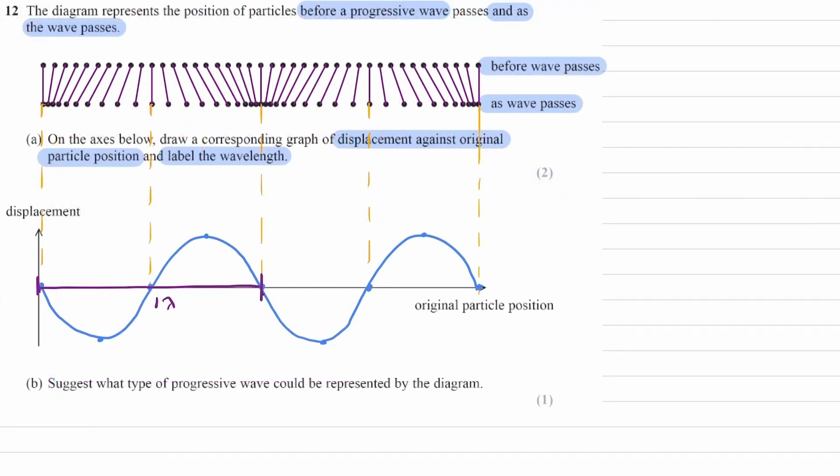And then for part B, suggest what type of progressive wave could be represented by the diagram. This is a longitudinal wave passing through particles. The particles are moving back and forth. Their displacements are parallel to the direction of energy propagation. Energy is transferring this way. So a longitudinal wave, an example of a longitudinal wave, is a sound wave.